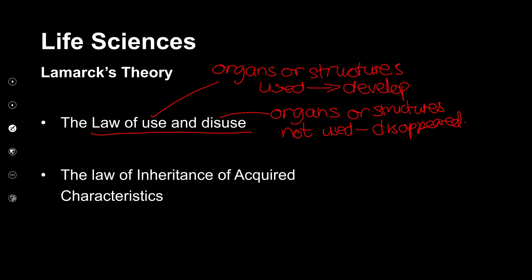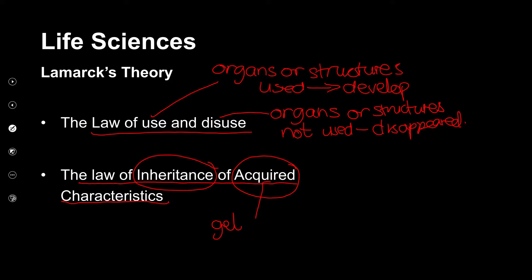Lamarck's second law was known as the law of inheritance of acquired characteristics. He said that organisms inherit an acquired characteristic — and acquired means that we get or develop this characteristic during our lifetime.